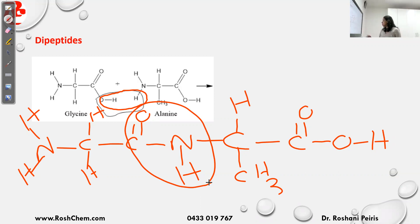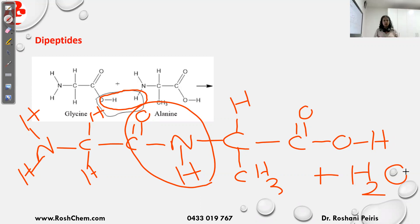The other product is the dipeptide and you get a water molecule as the byproduct. If you have two different amino acids, you can get two dipeptides. To get the first dipeptide, I put glycine first and then alanine. If you want to get the second dipeptide, you draw alanine first and then glycine next to that. Again you remove water, and you will get another molecule — the second dipeptide.